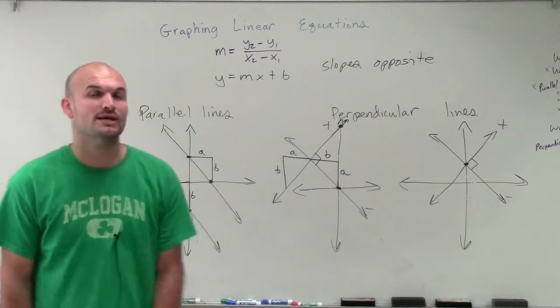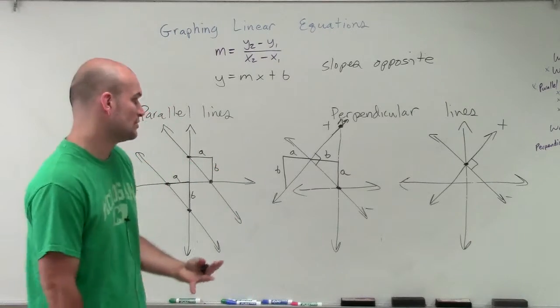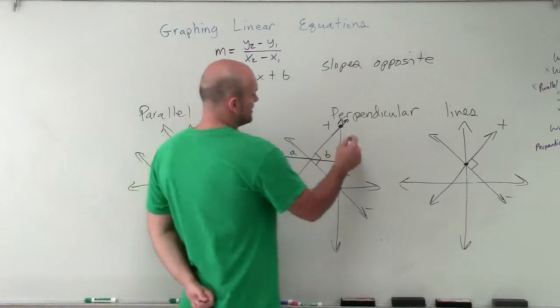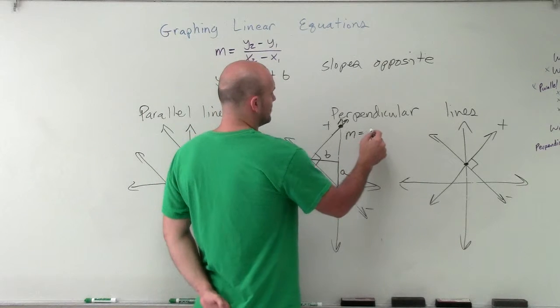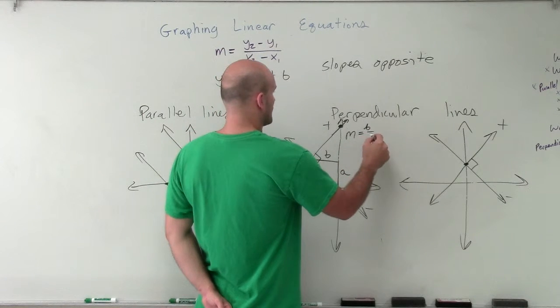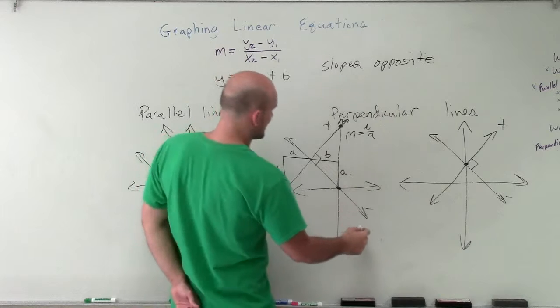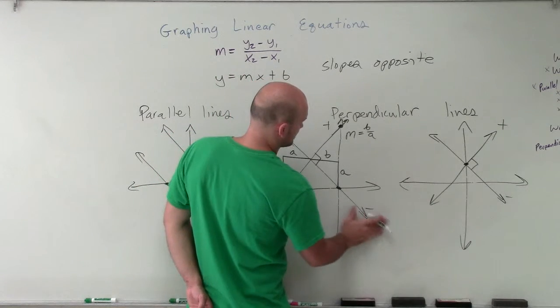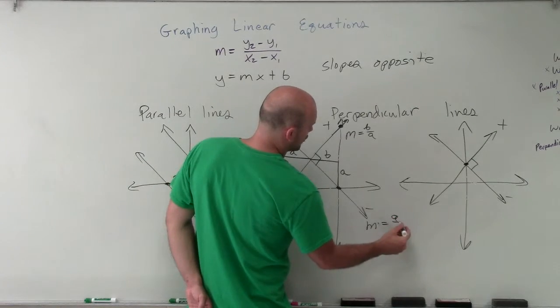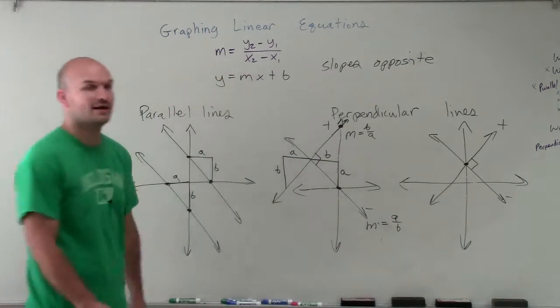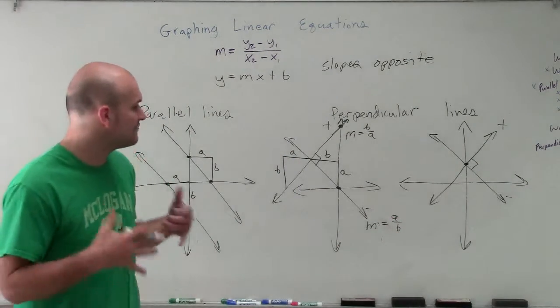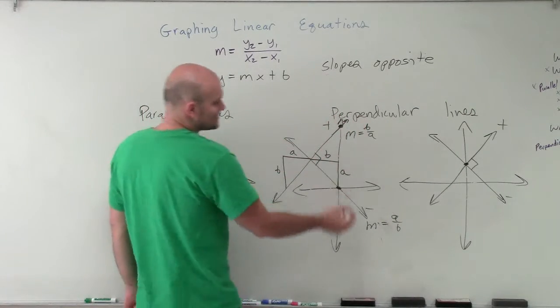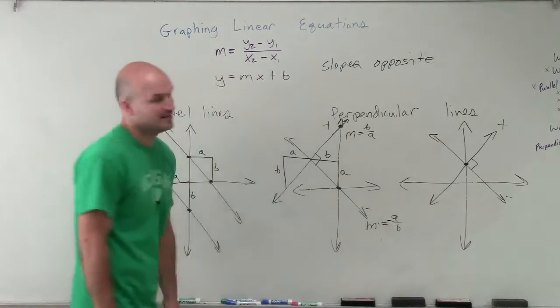So their slopes are actually what we call opposite reciprocals, meaning that they're going to be reciprocals of each other. So if I said that this line has a slope of b over a, then this line is going to have a slope of a over b. So perpendicular lines have reciprocal slopes, and also if this slope is positive, then we know that this slope has to be negative.